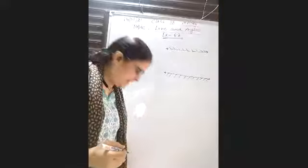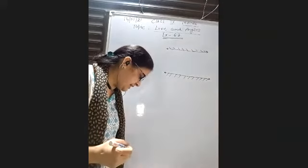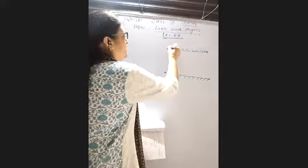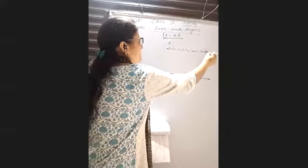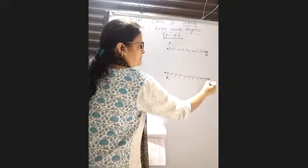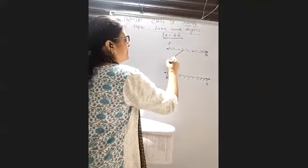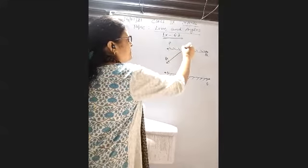These are two mirrors placed parallel to each other. An incident ray AB strikes the mirror PQ at point B. The reflected ray then moves along a path and strikes the mirror RS at point C.